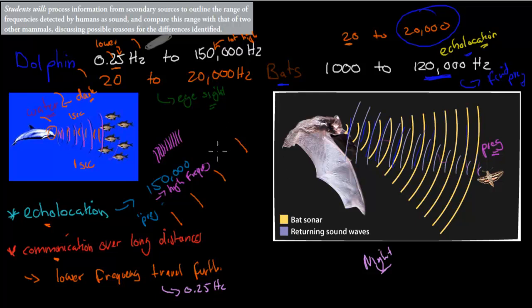Whereas both the dolphin and the bat rely a lot on hearing. The dolphin lives in water, which is often dark — it can't see far. The bat hunts in the dark, so it can't see far either. They both use echolocation, which is why they need higher frequencies — the dolphin up to 150,000 Hz and the bat up to 120,000 Hz. Those high frequencies allow echolocation: the sound hits prey, bounces back, and the time taken and direction of the echo tells them where the prey is. On top of that, the dolphin also has a lower lower-limit, because lower frequency sounds travel further and allow it to communicate with dolphins across long distances in the ocean.